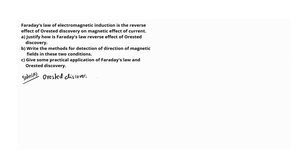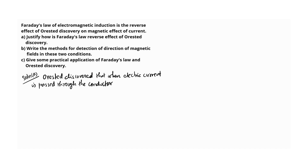Oersted discovered that when electric current is passed through a conductor, it produces a magnetic field. So we have this: a current-carrying conductor produces a magnetic field. This is the discovery of Oersted.